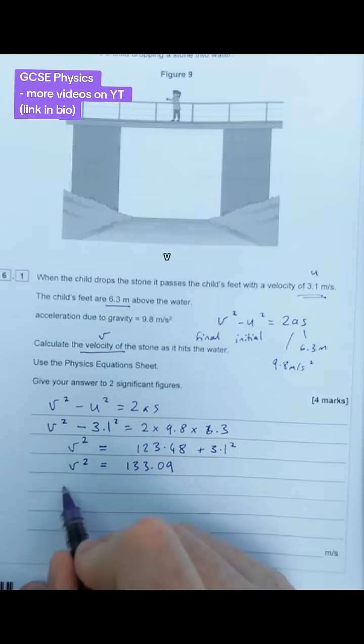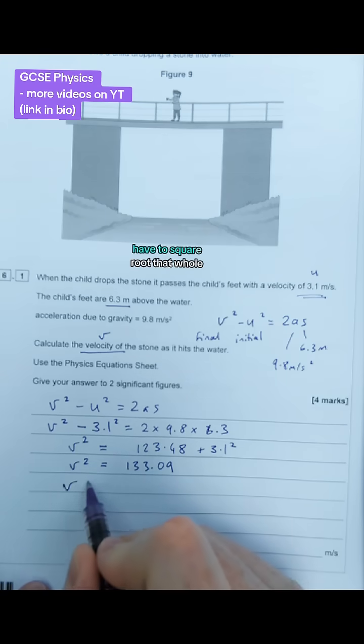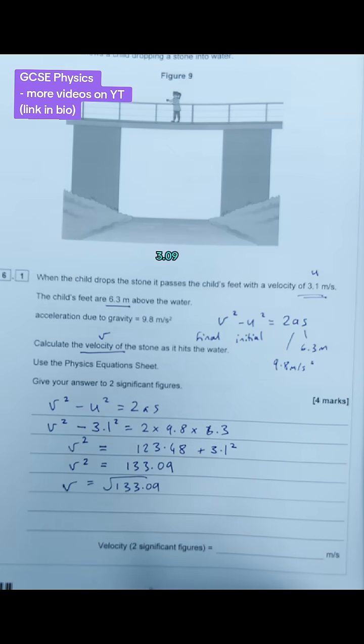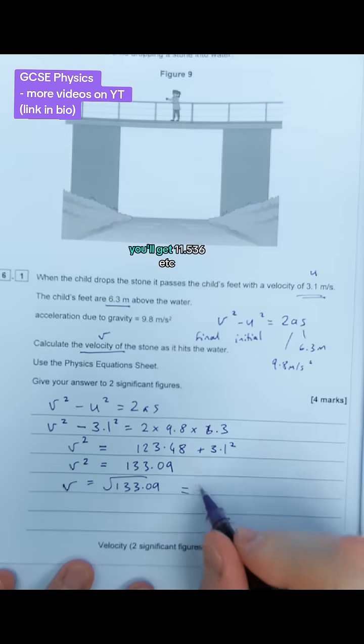Last stage, we're trying to find v, not v². So we have to square root that whole thing. Square root of 133.09. If you put that in your calculator, you'll get 11.536, etc.